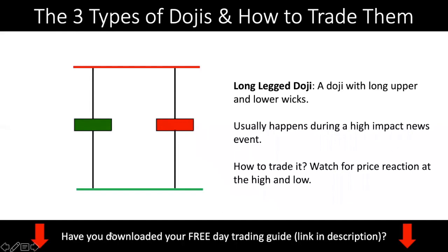The first kind of doji is a long-legged doji. As the name implies, you have a long upper wick and a long lower wick. What usually happens when you see a long-legged doji is that it usually happens during high-impact news events such as FOMC, NFP, interest rates, or unemployment rate data. This is when price will spike in both directions because the market is trying to whip out stop holders — whether you buy or sell, you get whipped both ways. This is a very good way to identify support and resistance.